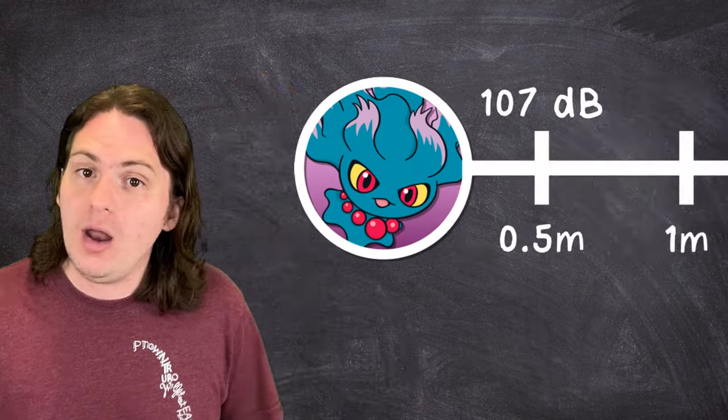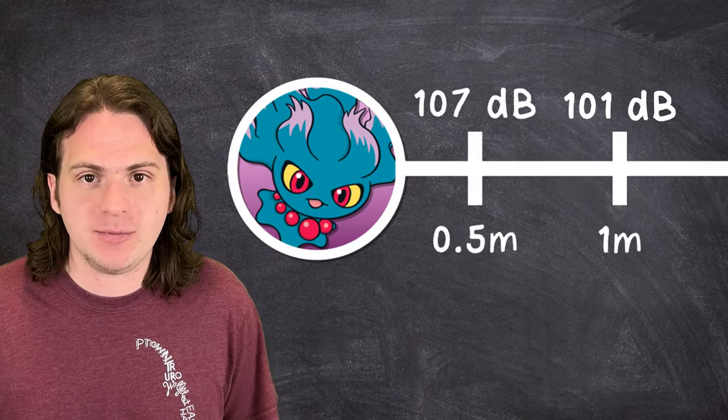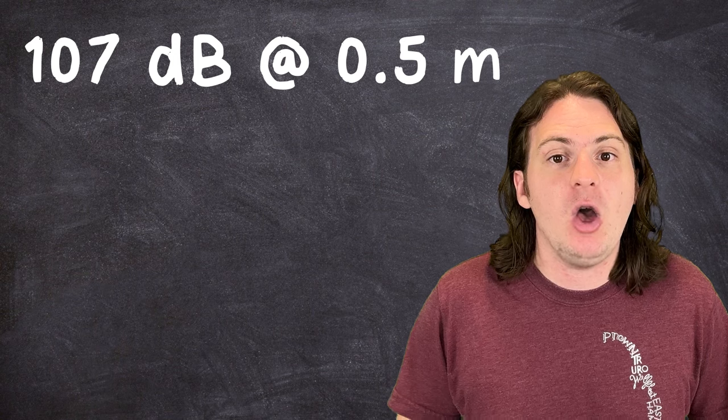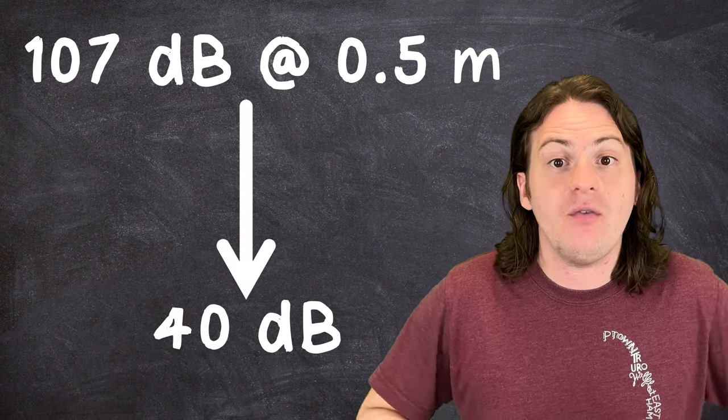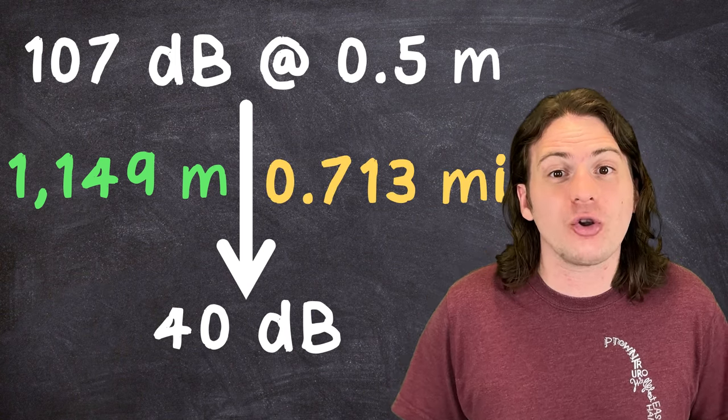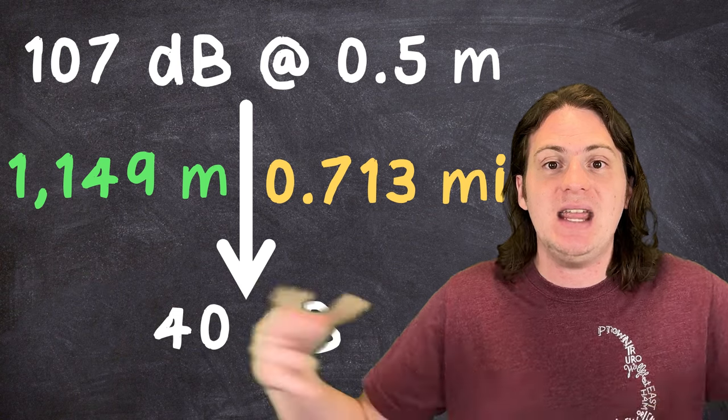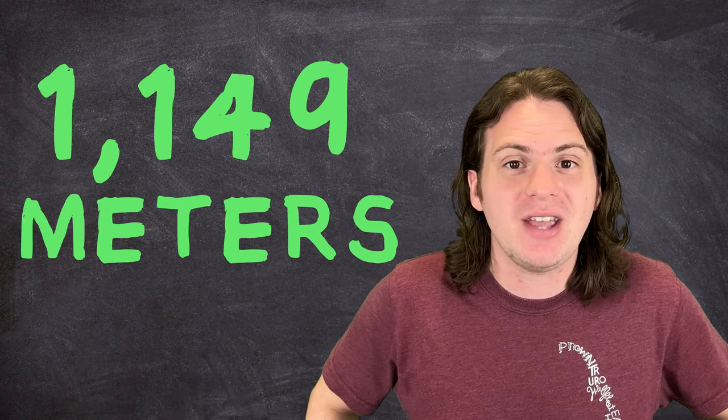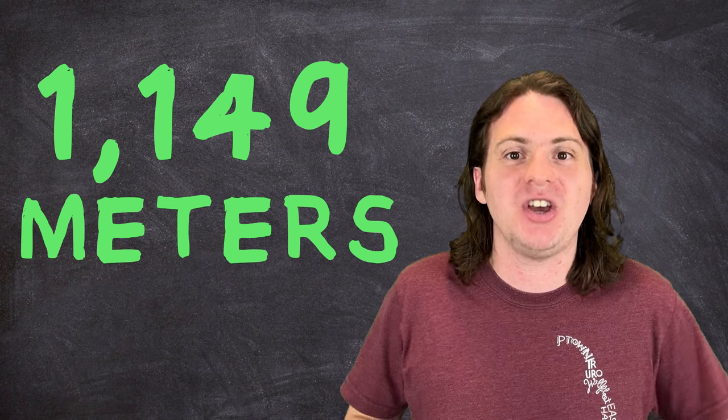If the volume decreases by 6 decibels every time you double the distance, that means that at 1 meter it will be 101 decibels, at 2 meters it will be 95, and so on. If we keep following this trend, we find that the sound of a cicada will need to travel a distance of 1,149 meters, nearly three quarters of a mile, before it's lost to the din of the ambient sound. And so, after all that, 1,149 meters is our final range for Perish Song.